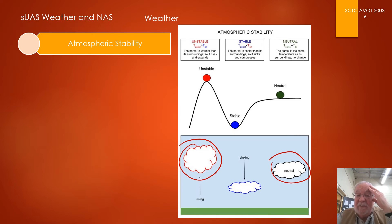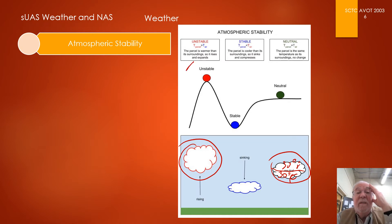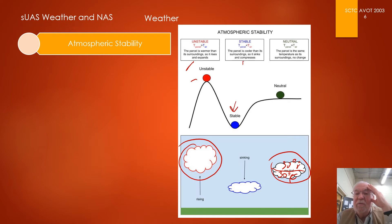To summarize: unstable air means the parcel is warmer than the surrounding air, so it rises and expands — unstable. Stable air means the parcel is cooler than its surroundings, so it sinks and compresses. Neutral means the parcel is the same temperature as the surroundings — no change, it doesn't rise or fall.